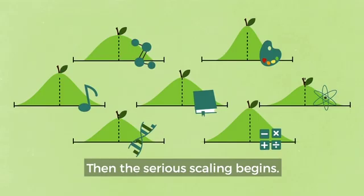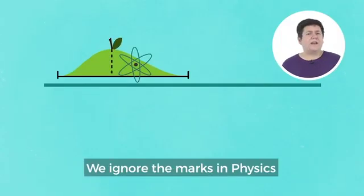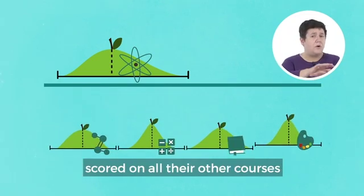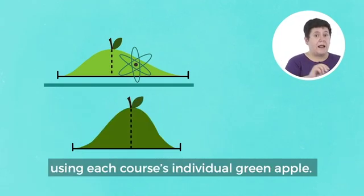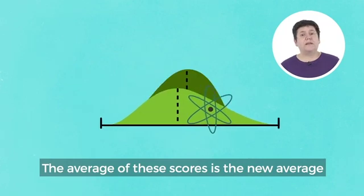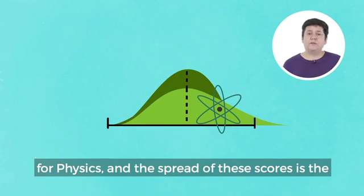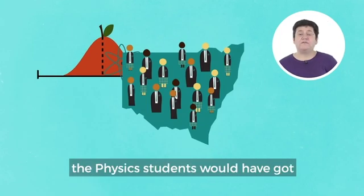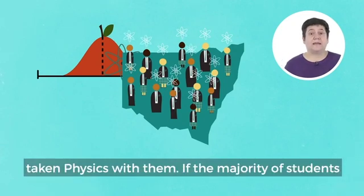Then the serious scaling begins. Suppose we want to scale physics — we ignore the marks in physics and we look at how the physics students scored on all their other courses, using each course's individual green apple. The average of these scores is the new average for physics, and the spread of these scores is the new spread for physics. We've created a red apple for physics. The new marks reflect the mark the physics students would have got if all students in the state had taken physics with them.